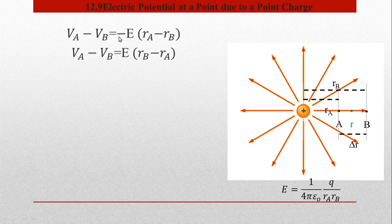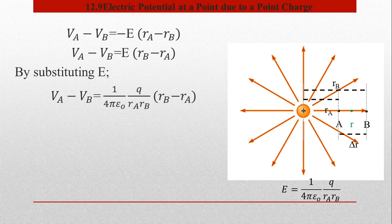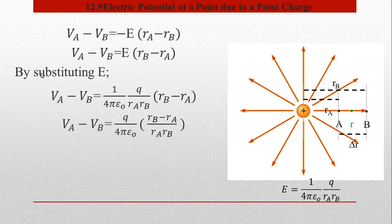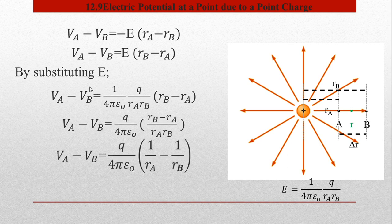اب minus sign کو absorb کر لیں تو R_B positive اور R_A negative ہو جائے گا۔ Rearrange کر کے لکھیں، پھر electric field کی وہ value جو ابھی find کی گئی ہے اس میں substitute کریں۔ جب expression کو R_A اور R_B سے divide کریں گے تو form بن جائے گی: 1/R_A minus 1/R_B۔ باقی تمام چیزیں ساتھ اسی طرح چلیں گی۔ یہ potential difference between point A and B ہے جب charge point B سے A کی طرف move ہو، point charge کے field میں۔